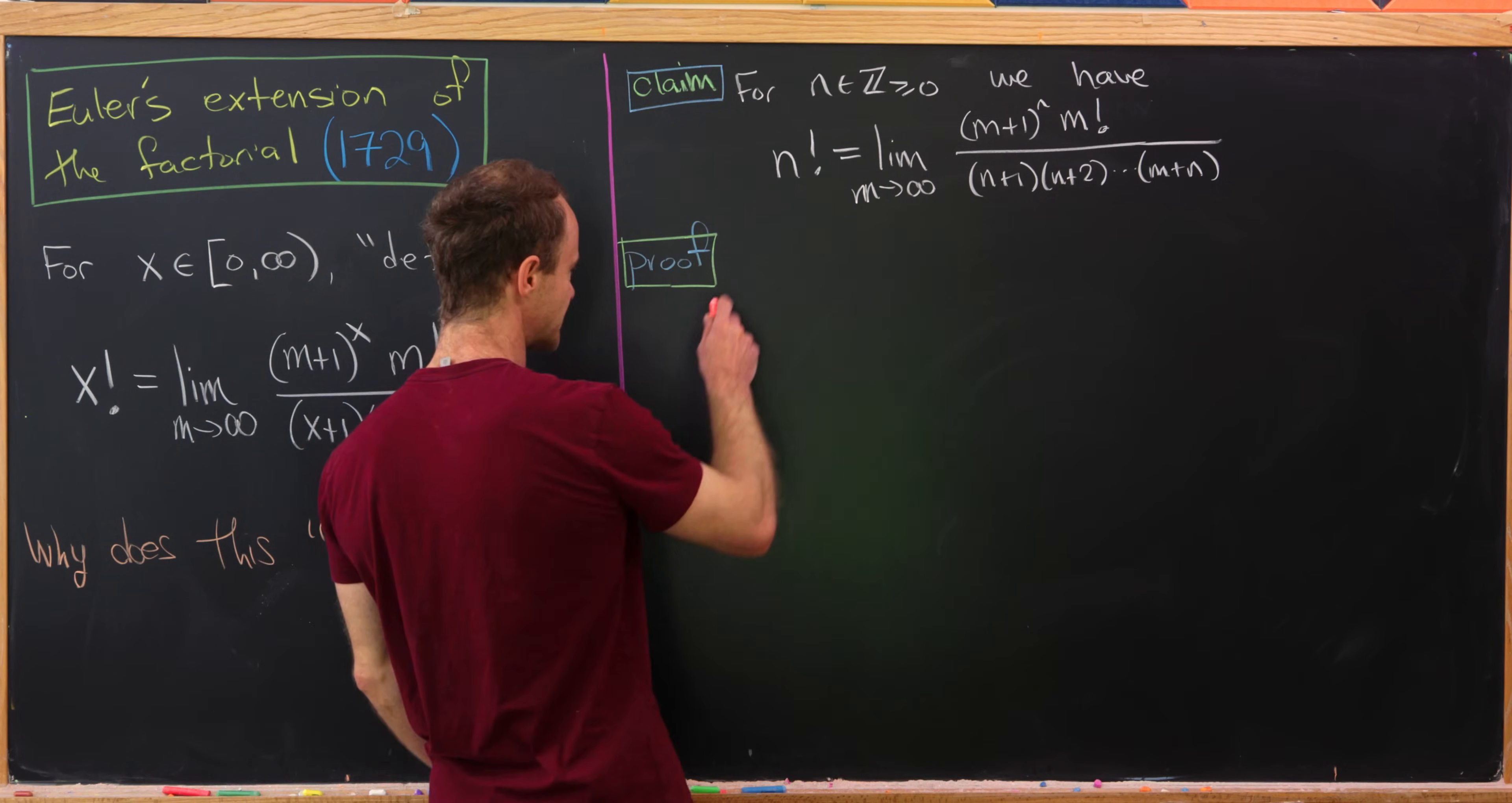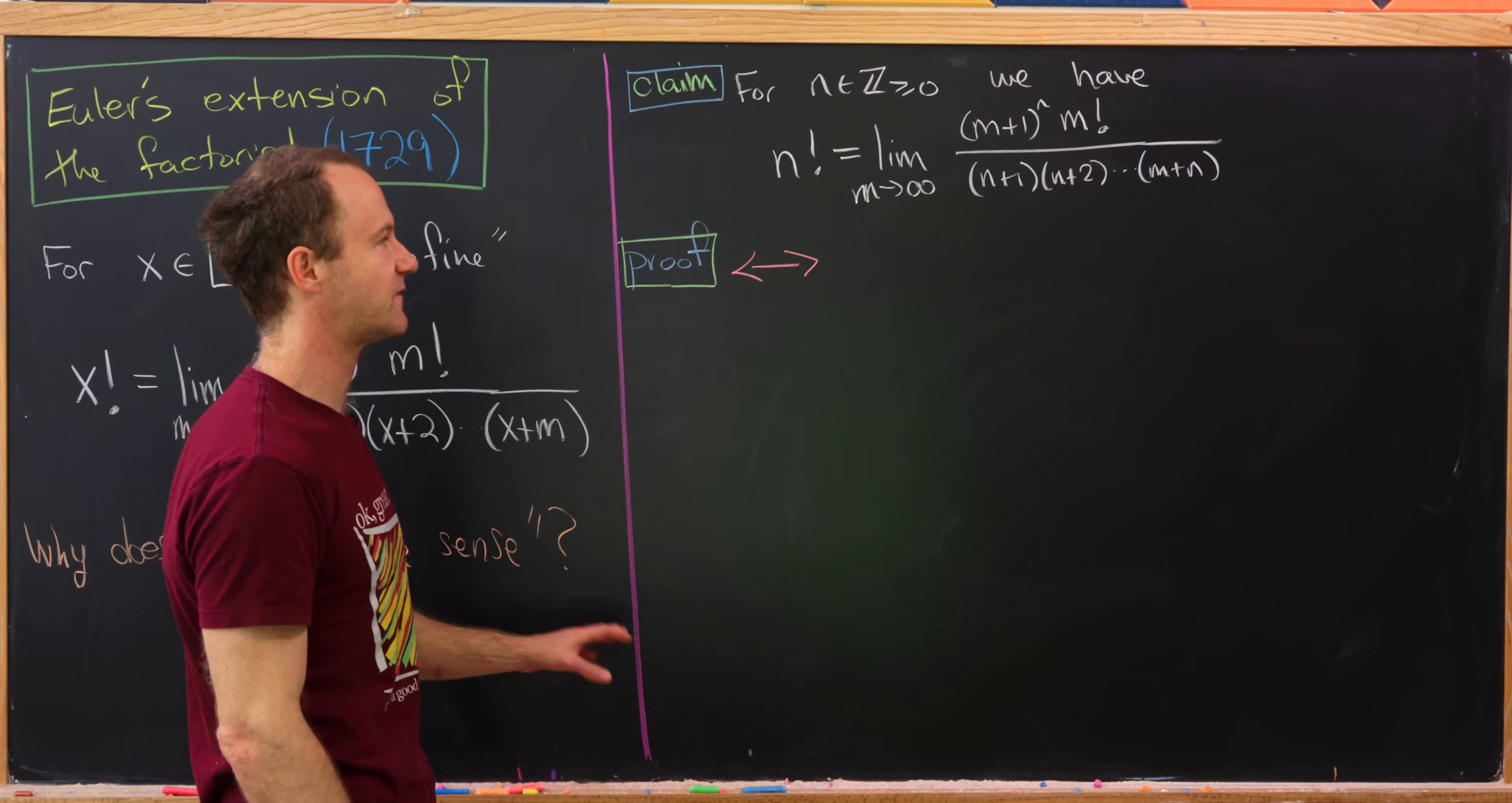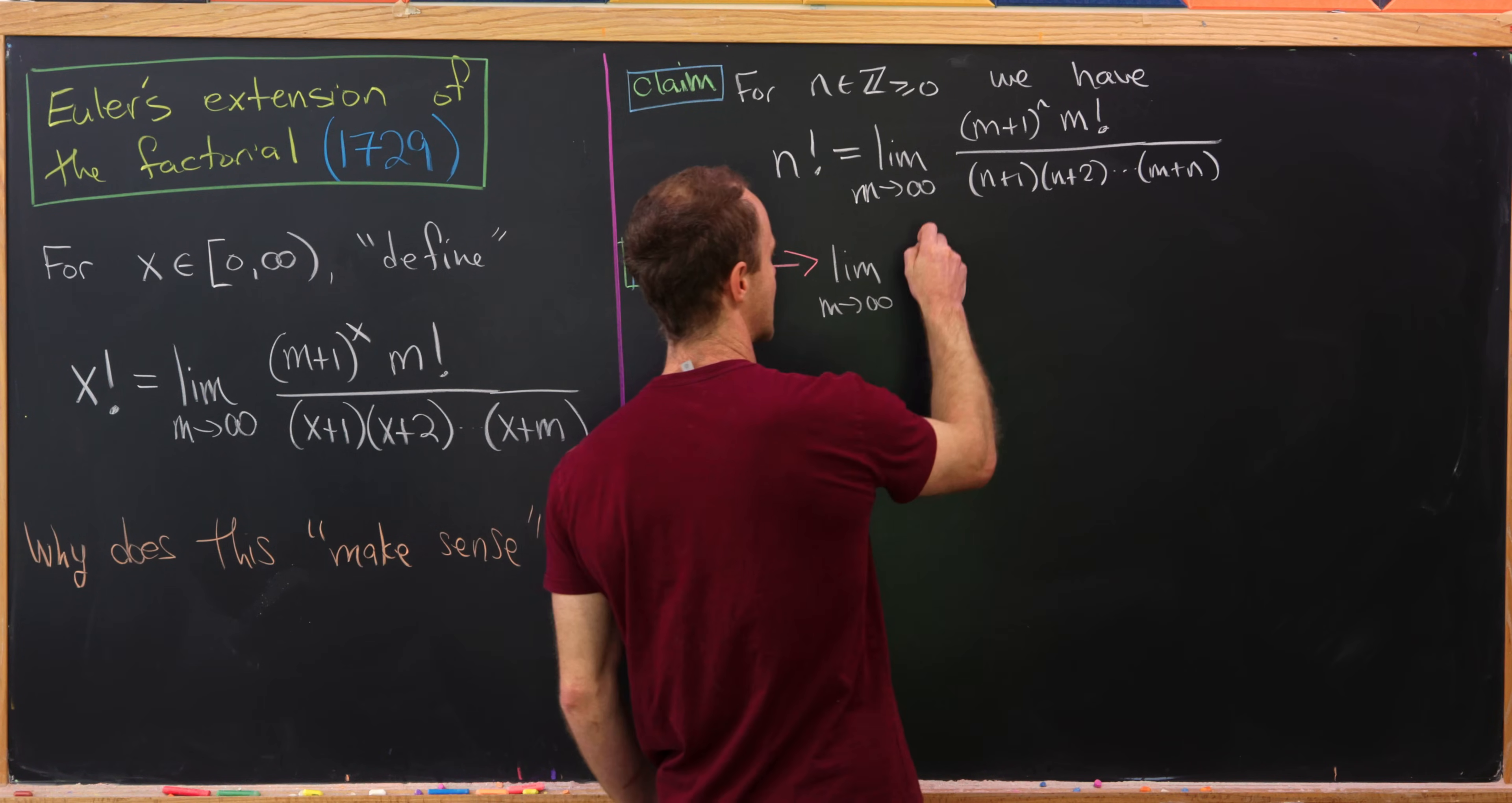Okay, so the first thing that we're going to do is note that this limit is equivalent to the following limit, and that is the limit as m goes to infinity. I'm going to leave the numerator the same.